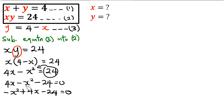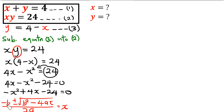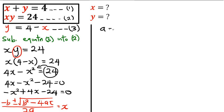We move the x squared to the front to get: minus x squared plus 4x minus 24 equals 0. To get the value of x, we're going to use the quadratic formula: x equals negative b plus or minus the square root of b squared minus 4ac, all over 2a. From this equation, the value of a is going to be minus 1.